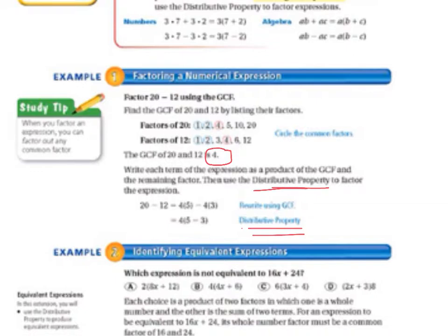Now, let's take a look at our study tip to the left. It says when you factor an expression, you can factor out any common factor. So, we're using the greatest common factor, but you can factor out any common factor.